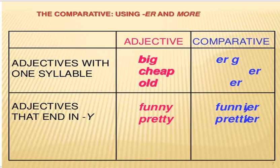Adjectives that end in -Y: Y hərfi ilə bitən sifətlərdə Y çevrilir I-ə, sonra -er şəkilçisi əlavə olunur. Məsələn, funny → funnier, the funniest olacaq üstünlükdə. Demək, tək hecalı sifətlərdə -er əlavə olunur, çox hecalılarda -more əlavə olunur. Amma sifətin sonu Y hərfi ilə bitirsə, o həmçə tək hecalı kimi dərəcələnir, yəni more əlavə olunmur.